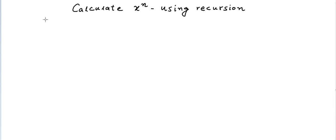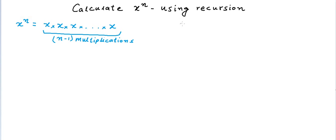In this lesson we will try to solve another problem using recursion. Given two positive numbers x and n, we want to calculate x to the power n, which is x multiplied by itself n times. To calculate x to the power n, we perform exactly n minus 1 multiplications. The simplest approach is to start with a variable result, initialize it to 1, then run a loop from 1 to n, multiplying result by x each time.